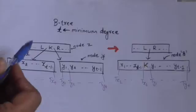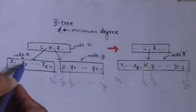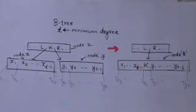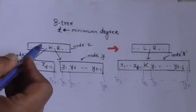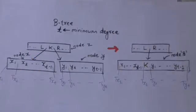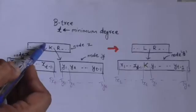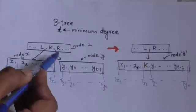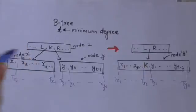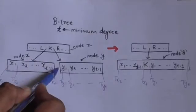Now suppose node x and node y are children of node z, and both of them have t minus 1 number of keys. Node x is at the left of key k of node z, and node y is at the right of key k of node z. Now we can merge these two nodes x and y into a single node s.